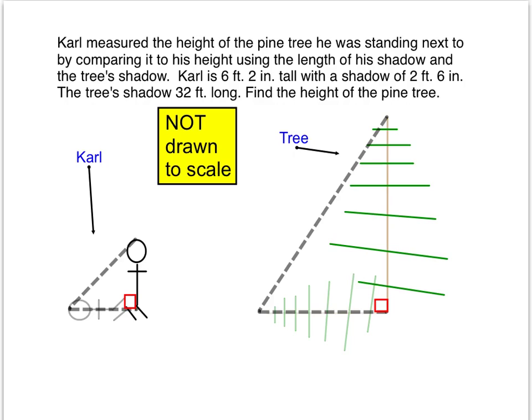We know that Carl is six foot two and his shadow is two foot six inches long. Six feet is the same as 72 inches because there are 12 inches in a foot, so therefore six foot two is 74 inches. Carl is 74 inches tall.